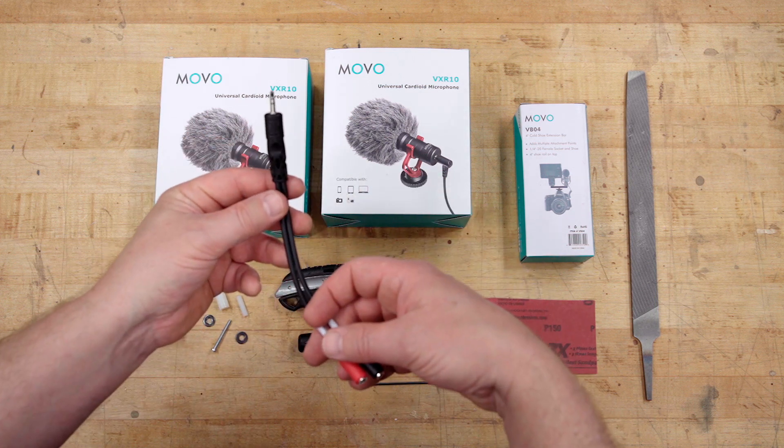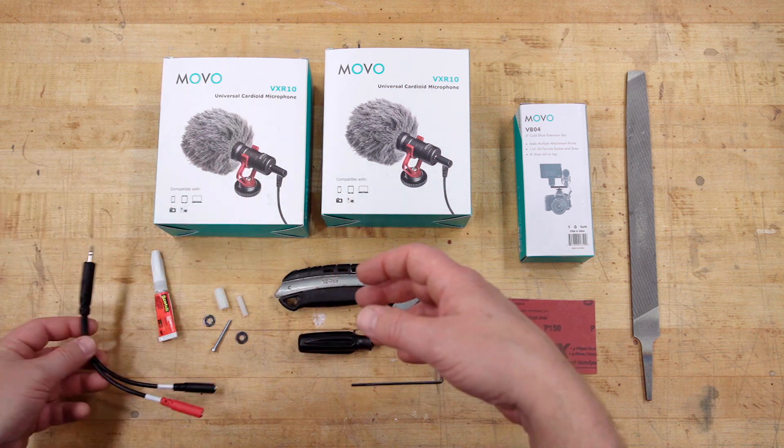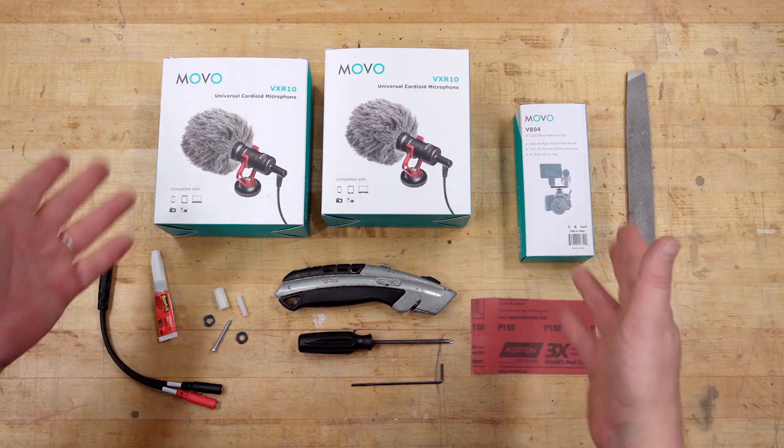We need a Phillips head screwdriver, a number two millimeter Allen wrench, a pair of nylon bushings, a pair of small washers, an M3 30 millimeter screw, some super glue, and lastly, this cable that will allow us to sum our left and right microphones into one stereo input that we can feed into an audio recorder, or in my case, my mirrorless camera. That's everything you need. Let's get started.